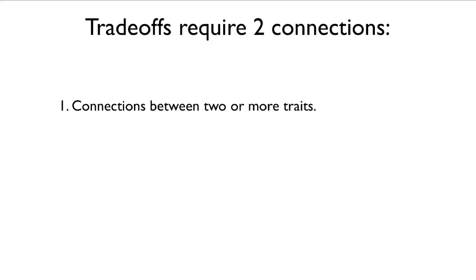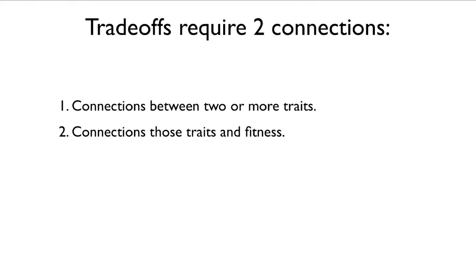Trade-offs require two connections. The first is that there be a connection between two or more traits — it could be genetic, developmental, physiological, it could have roots deep in time, or it could be phylogenetically constrained. The connections between those traits must also exist with respect to fitness. If the traits are neutral, we can't really discuss a trade-off, because a trade-off expresses a cost-benefit relationship where the currency is fitness.